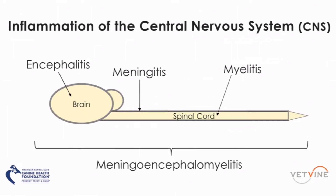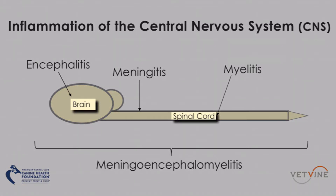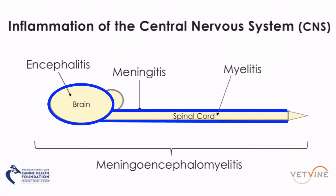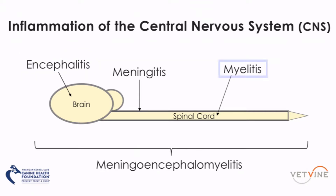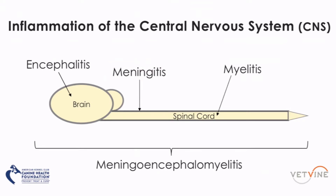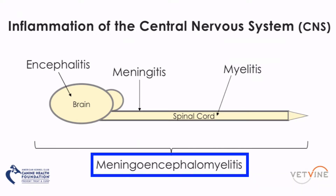To start with some general information and definitions: the central nervous system consists of the brain and the spinal cord. Both of those structures are surrounded by a fibrous tissue called the meninges, and beneath the meninges is where the cerebrospinal fluid, or CSF, resides. Inflammation of the brain is called encephalitis, inflammation of the spinal cord is called myelitis, and inflammation of the meninges is meningitis. Each of those can occur individually or in combination — for example, inflammation of all three elements would be called meningoencephalomyelitis.